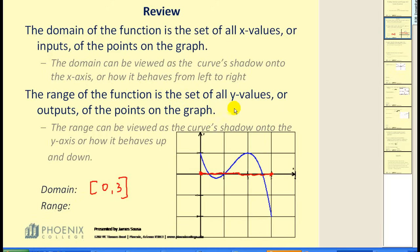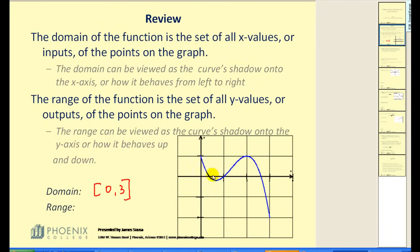The range is done in a similar fashion, except now we're going to be concerned about y-values. The range of a function is the set of all y-values or outputs of the points on the graph. The range can be viewed as the curve's shadow onto the y-axis, or how it behaves moving up and down. If I project this curve onto the y-axis, I might ask you: what is the lowest point on the graph? That would be here — I'll project it onto the y-axis at negative two. The highest point on the graph — there are actually two of them — would both project onto the y-axis at positive one. All these other points would shadow somewhere on this interval, and in fact, the range of this function is from negative two to positive one.